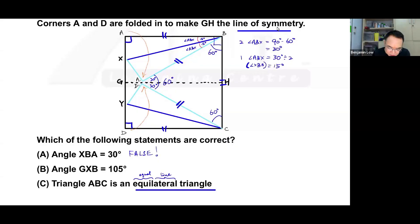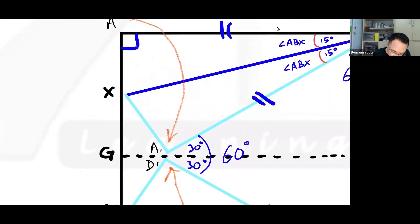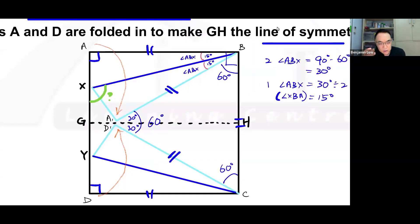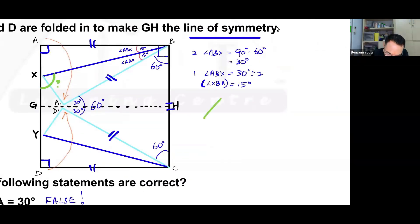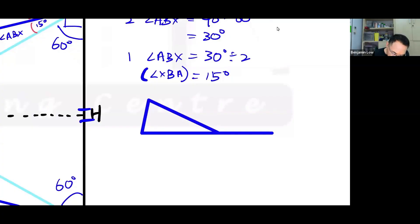Okay, false. Second one, is GXB 105? Where's GXB? G is here, X is here, B is here. So GXB is here. So this angle is GXB. Okay, maybe I use a different color, just for fun. Okay, so this angle is how much? That's the question. Okay, one of the things that you learn is that, let me illustrate. If I draw a triangle, right? Like this. Like this. Okay. And I'm given two angles here and here. Okay, these are called the interior angles of a triangle.